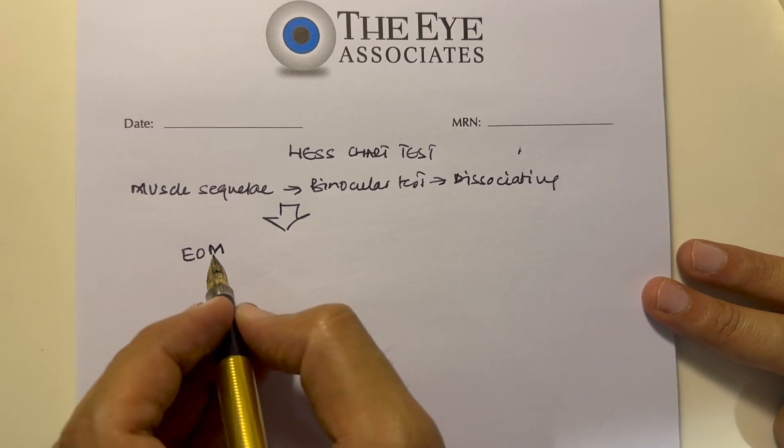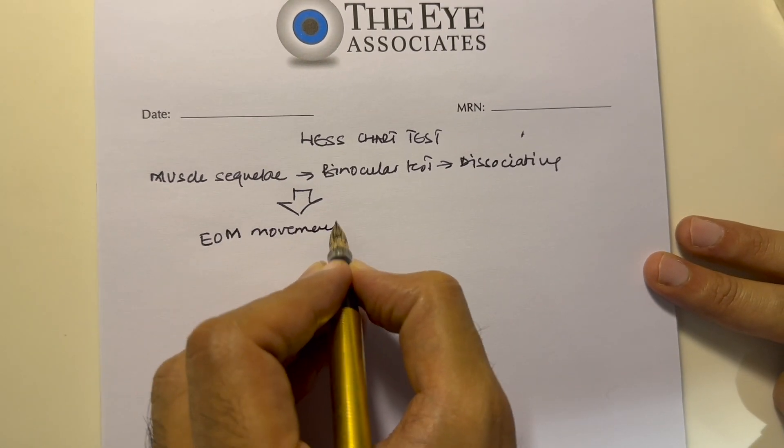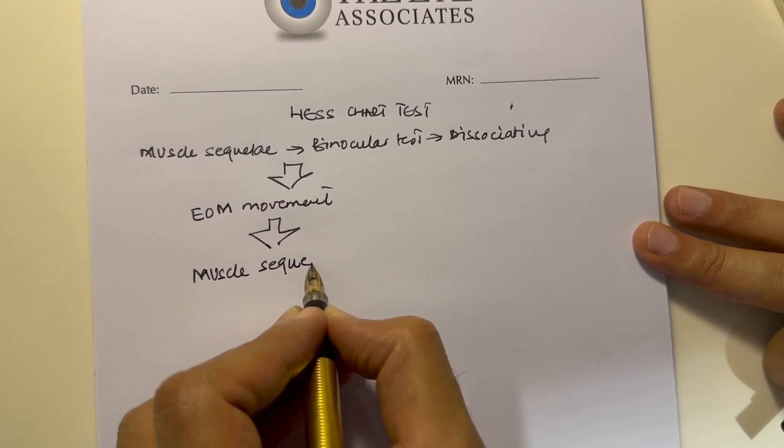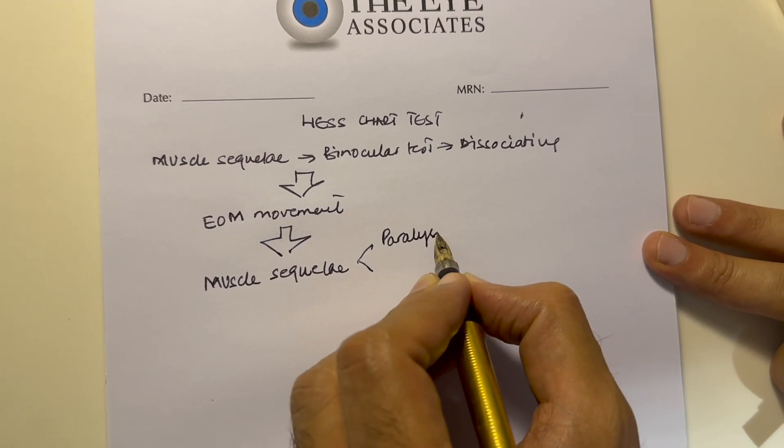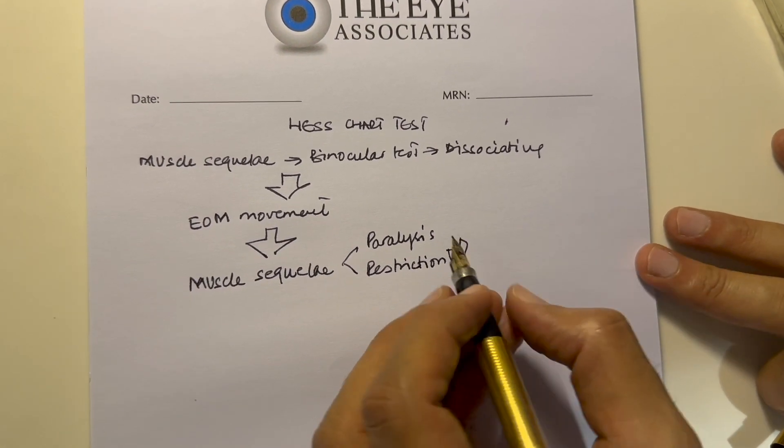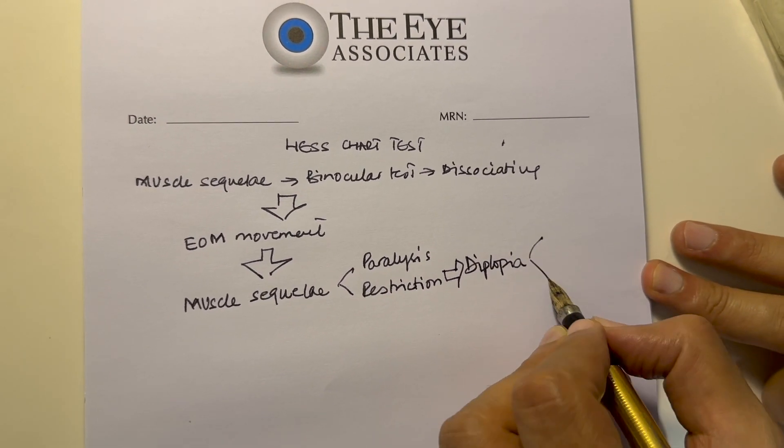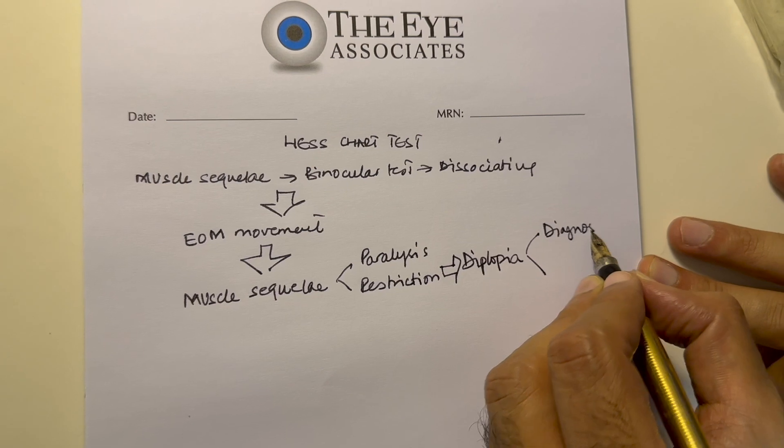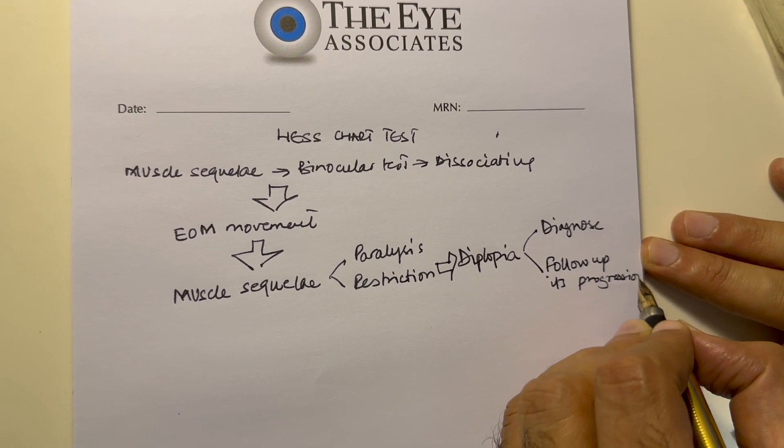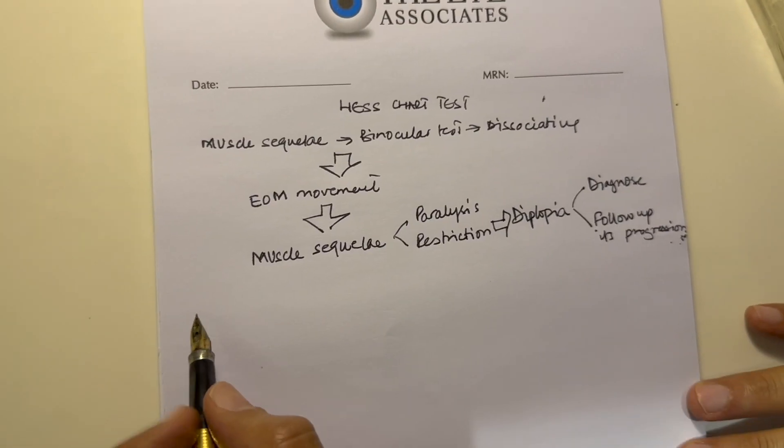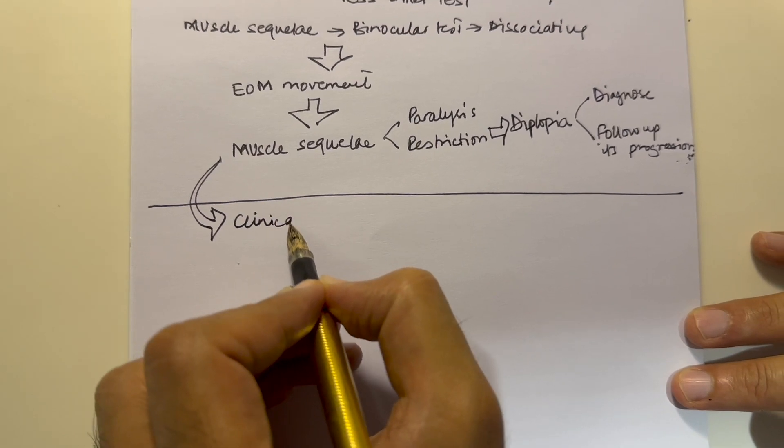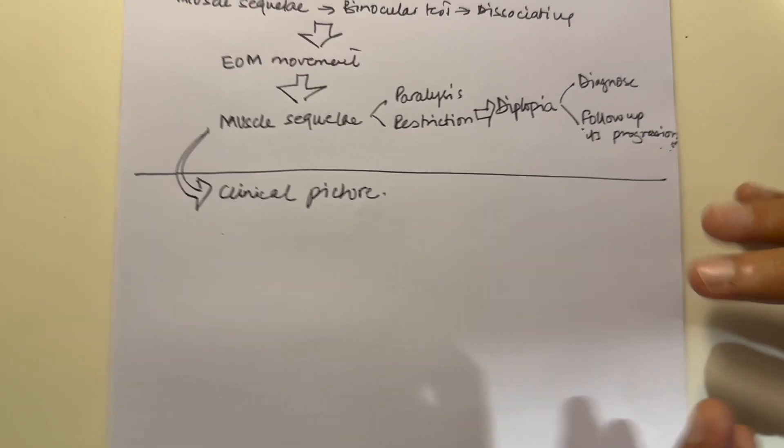This is used for any muscle sequelae which could be either muscle paralysis or restriction. Because of acute onset paralysis or restriction, you can have diplopia. This is done to either diagnose one of these problems or to follow up its progression or improvement. Keep in mind that all of these tests cannot be looked at in isolation and you always have to collaborate this with the clinical picture.